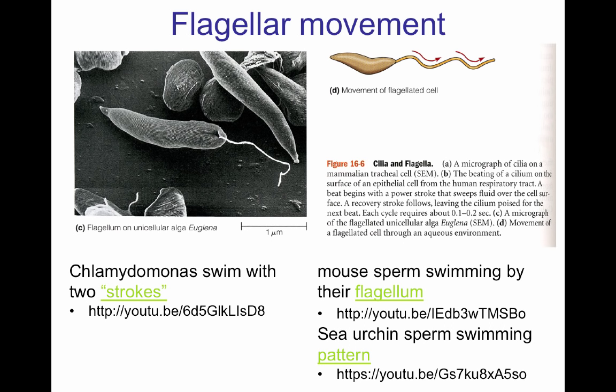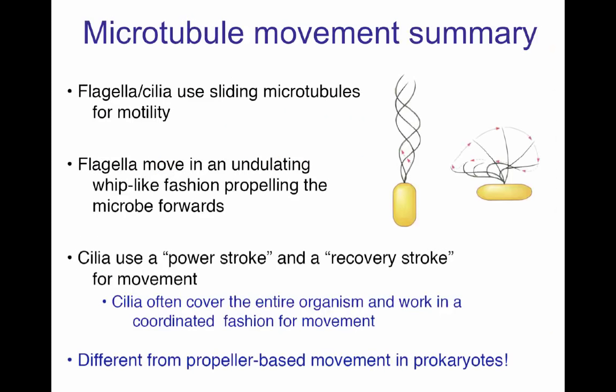To summarize, both flagella and cilia use sliding microtubules in the axoneme for motility. The flagellum moves in an undulating whip-like fashion, propelling the microorganism forward, whereas the cilia move by a power stroke and a recovery stroke. You often have one to two flagella in a microorganism, whereas thousands of cilia cover the entire organism and work in a coordinated fashion to allow movement. Keep in mind the difference between the propeller-based movement of the prokaryote flagellum and the eukaryotic flagella and cilia.